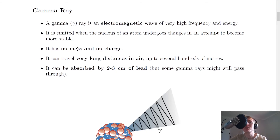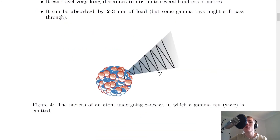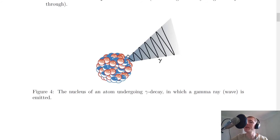Gamma rays have no mass and no charge — they have the least mass of the three types of radiation. Gamma rays can travel very long distances in air, up to several hundreds of meters, making them the most penetrating. They can be absorbed by two to three centimeters of lead, but some gamma rays may still pass through, because lead is not a perfect absorber. In fact, nothing can completely stop gamma rays. It's also important to note that the gamma ray is a wave, not a particle.